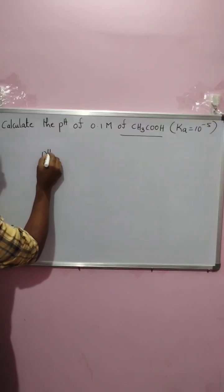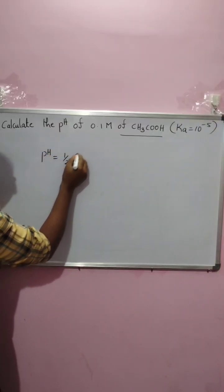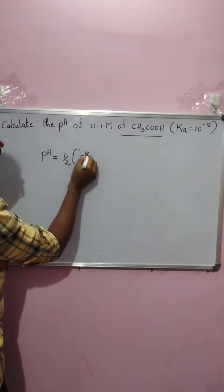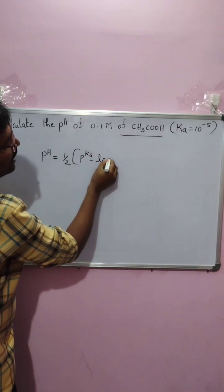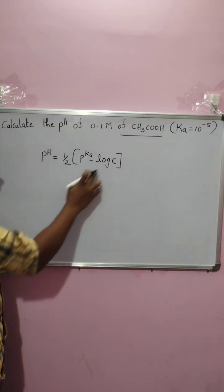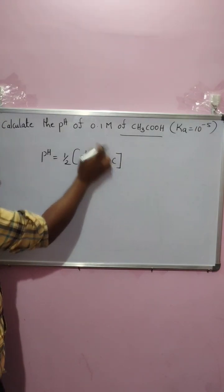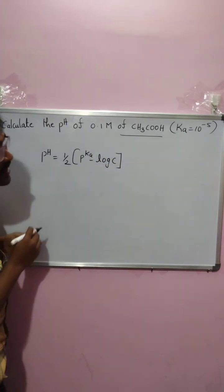The formula is pH equals to 1 by 2 into pKa minus log C. Here log C, that is C, is nothing but the concentration.